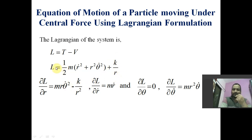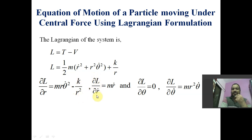The derivative of L with respect to r: in the second term there is r, and taking the derivative with respect to r gives half into 2r theta-dot squared, the 2 cancels, giving m r theta-dot squared minus k by r squared. The derivative of k over r is minus 1 over r squared, therefore it is minus k by r squared. The derivative of L with respect to r-dot equals m r-dot, since only r-dot appears in that term.